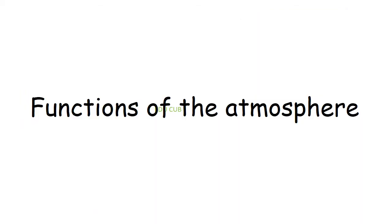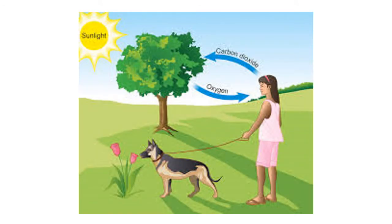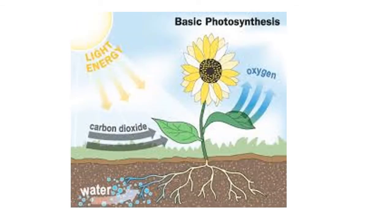Let's see the functions of atmosphere. Here, observe the diagrams which I am going to show you. Atmosphere provides oxygen needed for respiration of all animals and plants. Plants get carbon dioxide from atmosphere for photosynthesis.